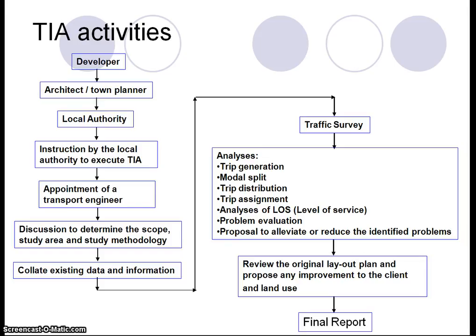TIA activities usually start with the developer. If he or she wants to develop a piece of land, they will engage an architect or town planner to design the development, then submit to the local authority, which instructs a traffic impact assessment study to be executed. The developer will then appoint a transport engineer, who determines the scope of the study area and study methodology.